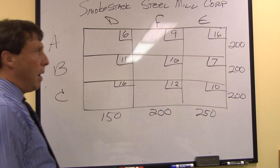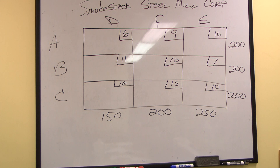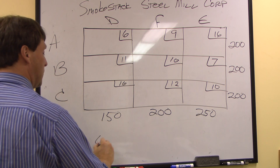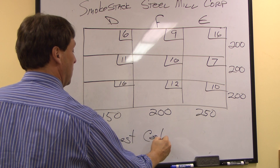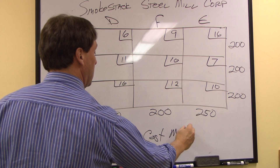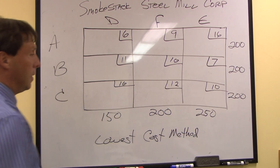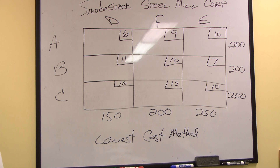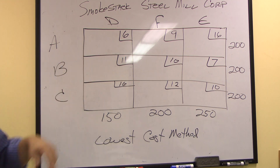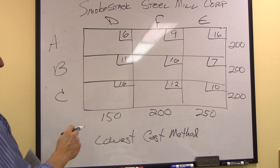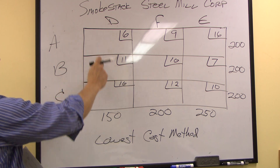So now we have it in standard form. What we're going to do next is find the initial feasible solution, and for this we're going to use the lowest cost method. Just like lowest cost suggests, we pick out the box with the lowest shipping cost. On our chart here, $6 is our lowest shipping cost, so we want to fill that first.